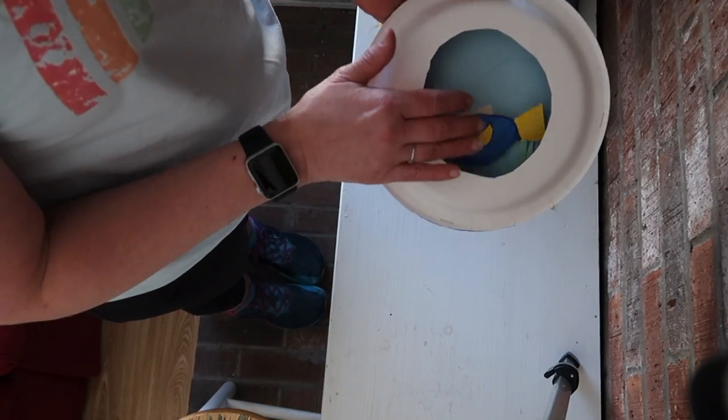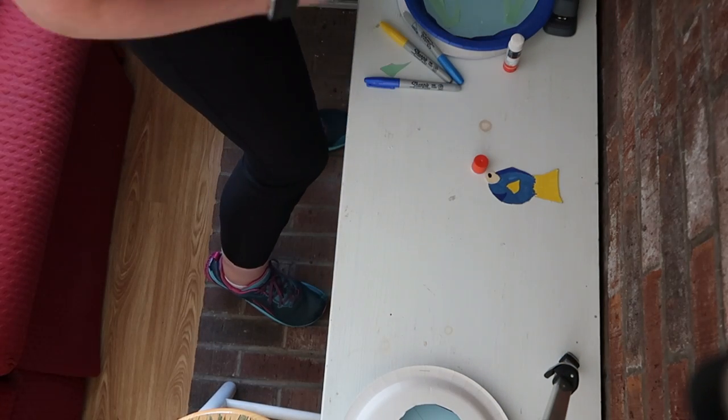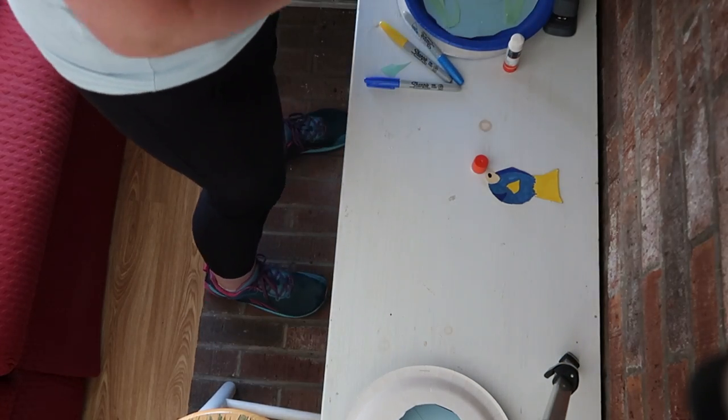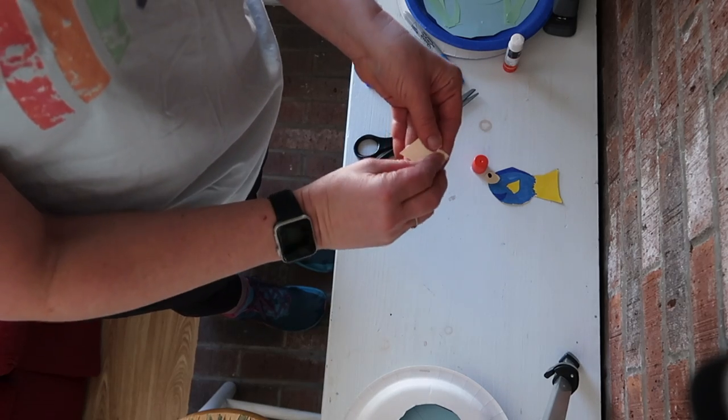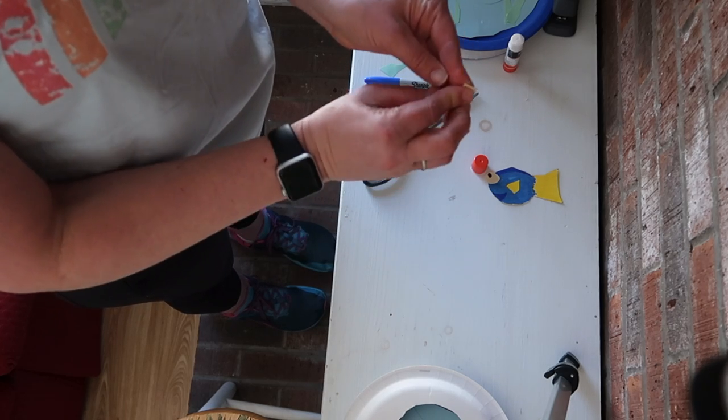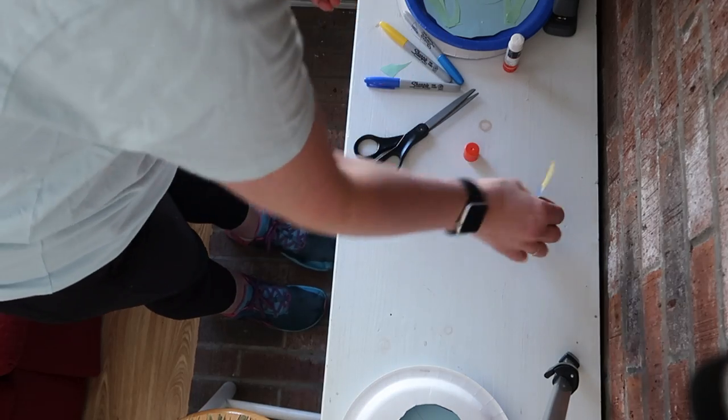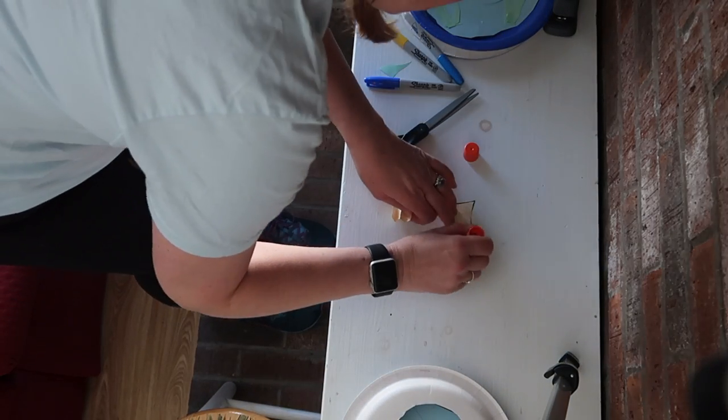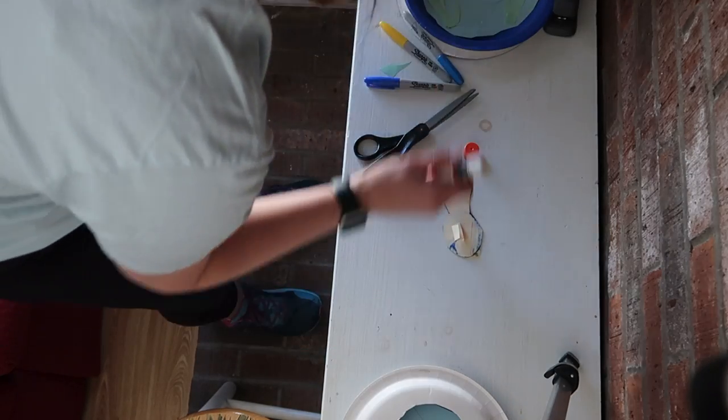Now this one I made Dory 3D. I'll show you how I did that because it's fun and not super hard. Once again, you're going to grab a scrap of paper. Older children will be able to do the accordion style fold and glue Dory's pop-out on one side.